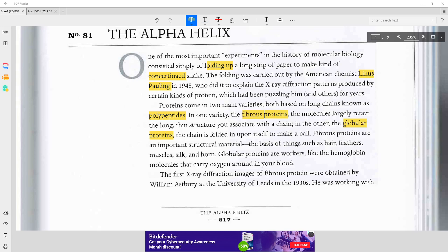One of the most important experiments in the history of molecular biology consisted simply of folding up a long strip of paper to make a kind of concertina snake.